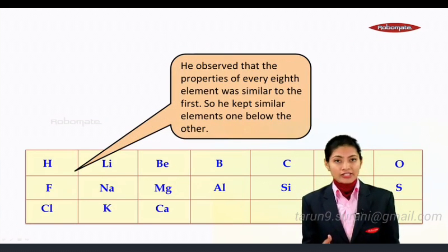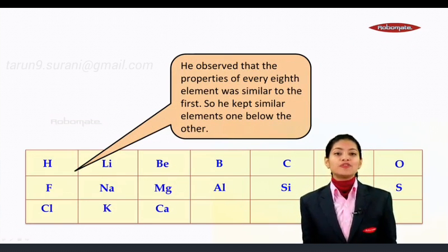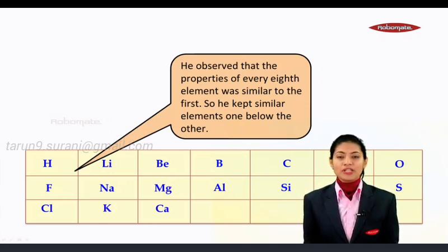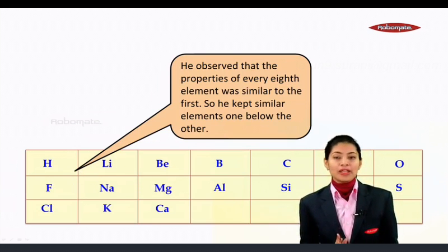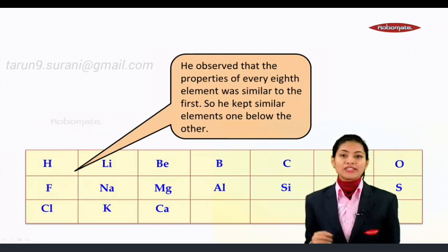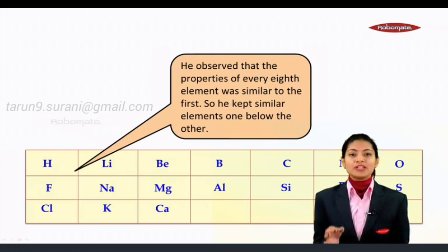Now once he arranged all the elements that were known to him, he realized he found that the property of every eighth element was similar to the first. For example, if hydrogen is the first element, then fluorine becomes the eighth element, and both their properties are similar. So he kept similar elements one below the other.